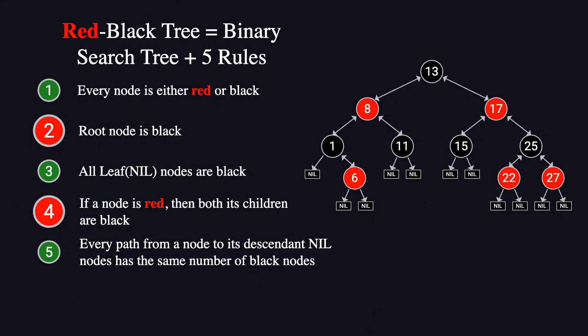In contrast, inserting a black node could disrupt the black height balance, making the adjustment process much more complex. That's why, in red-black trees, new nodes are always inserted as red.